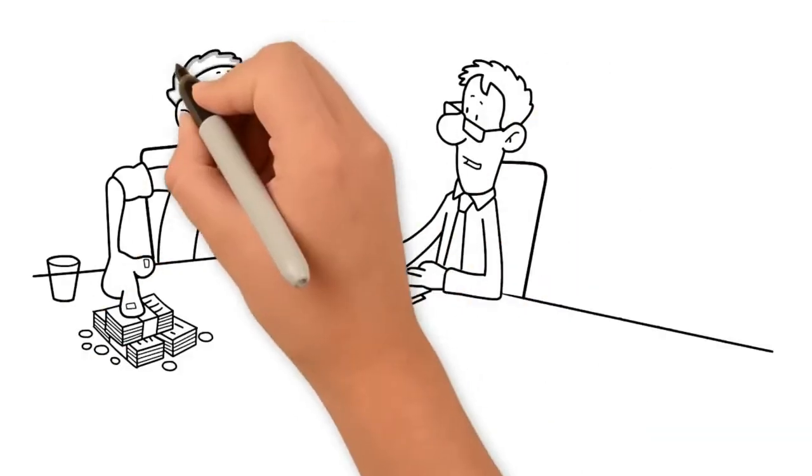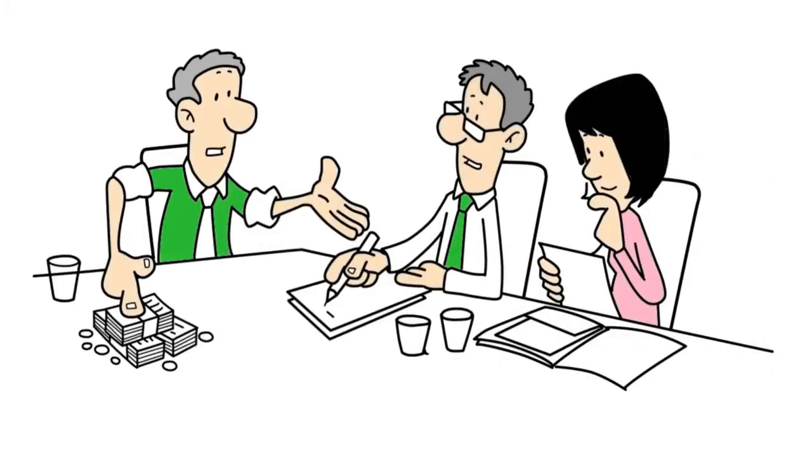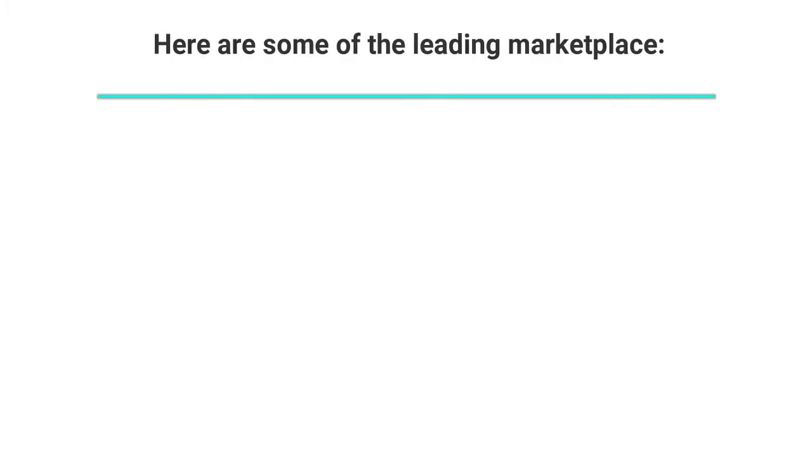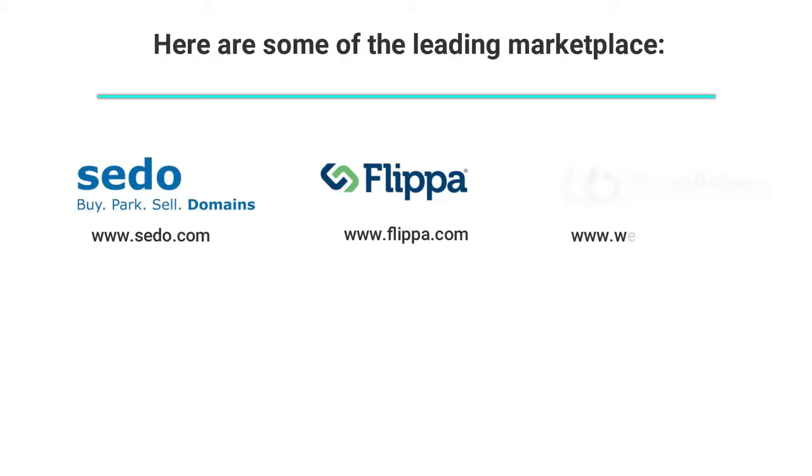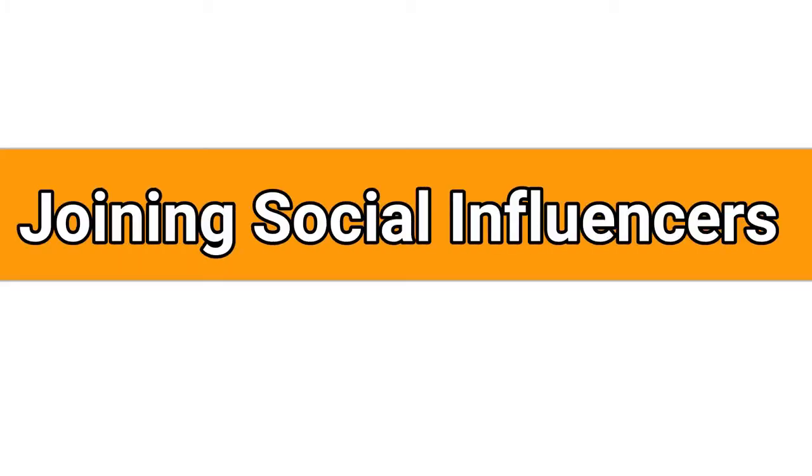Number four: site and domain flipping. Like real estate, this could be a fast way to make a lot of money by purchasing and reselling websites and domains for profits. Here are some of the leading marketplaces: flippa.com, sito.com, websitebroker.com, feinternational.com, exchangemarketplace.com.